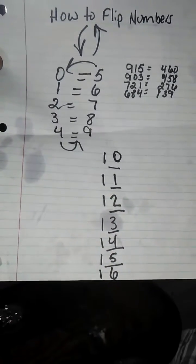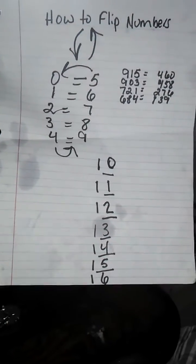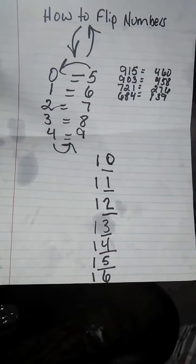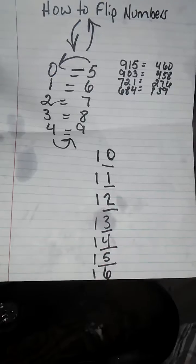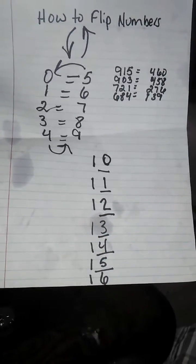So you guys, this is how you flip numbers. Your zero equals five, your one equals six, your two equals seven, your three equals eight, and your four is nine.